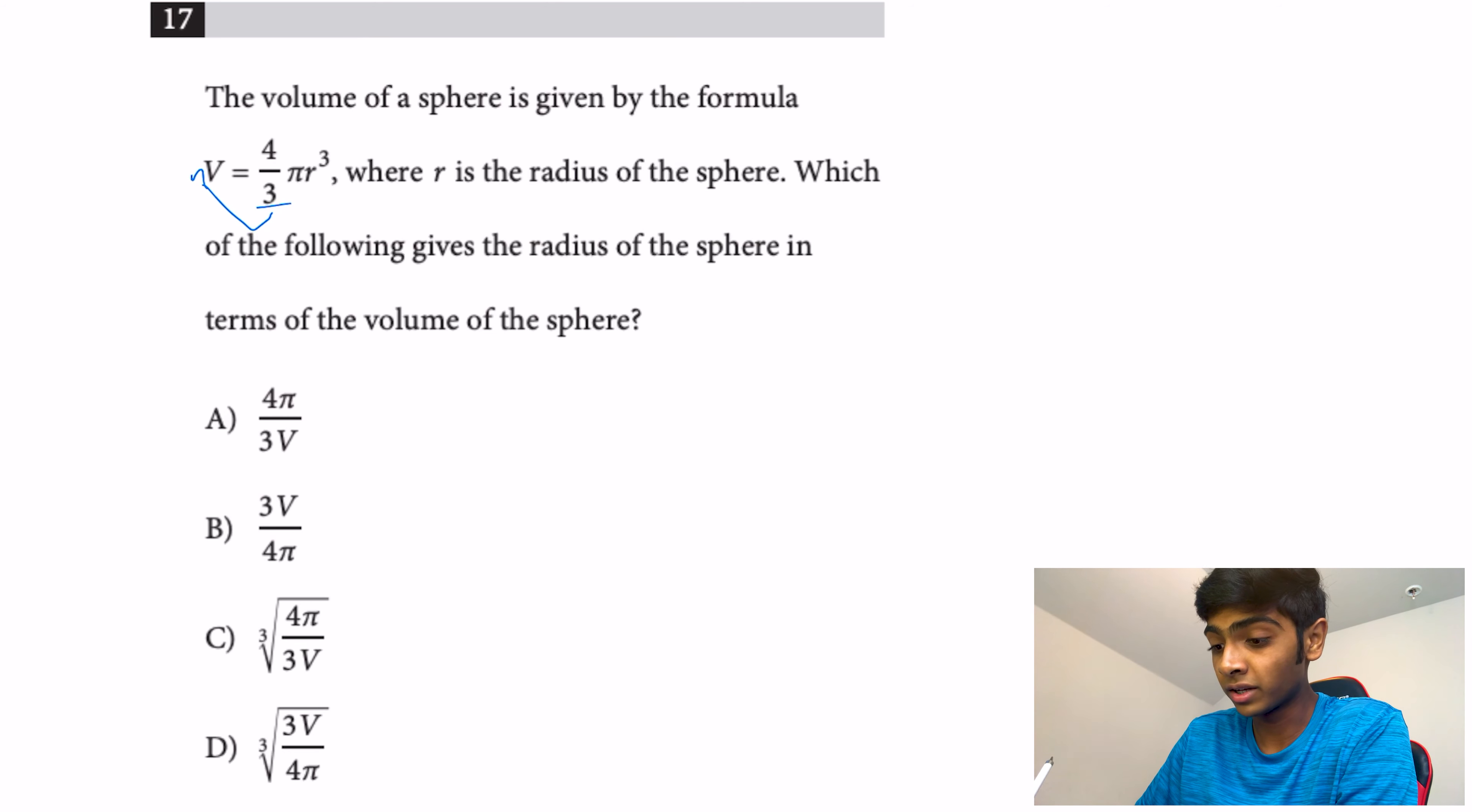When you divide by a fraction like 4/3, you just get the reciprocal, and that's the same as dividing it. So 3/4 goes over there, and we get πr³. Then I divide by π, so we get 3V/(4π) = r³.